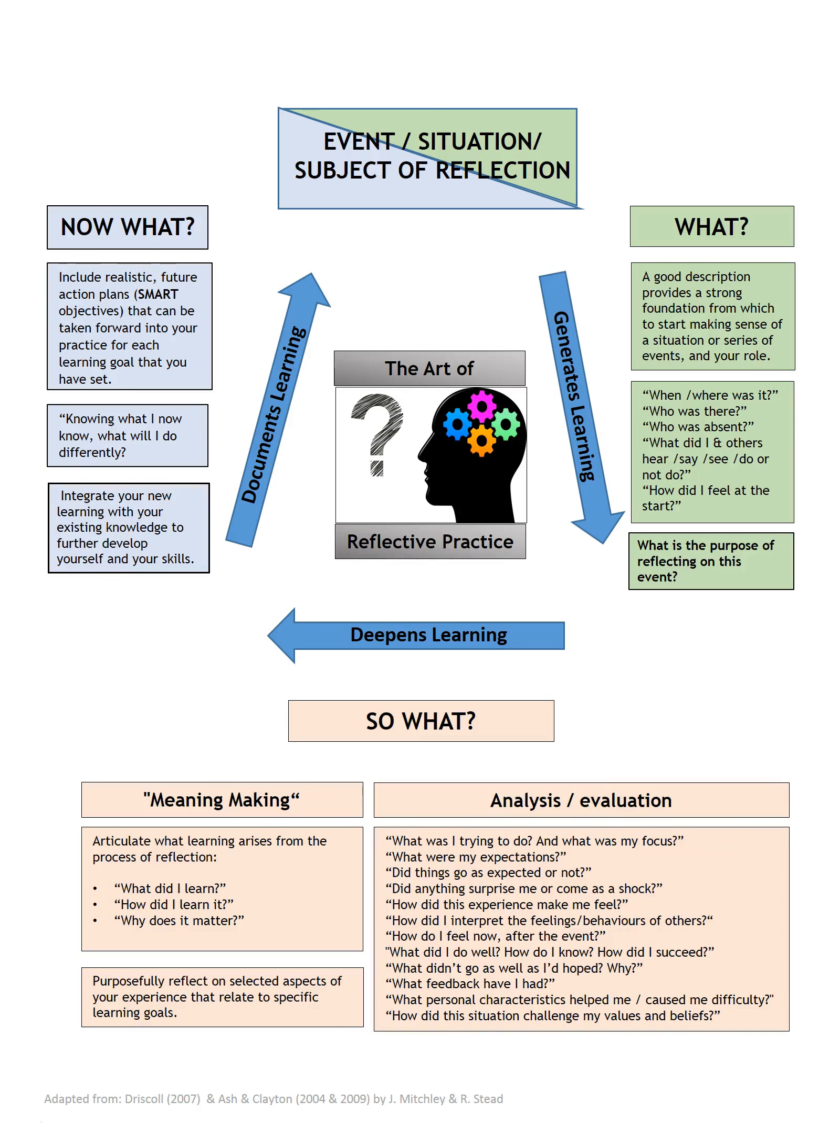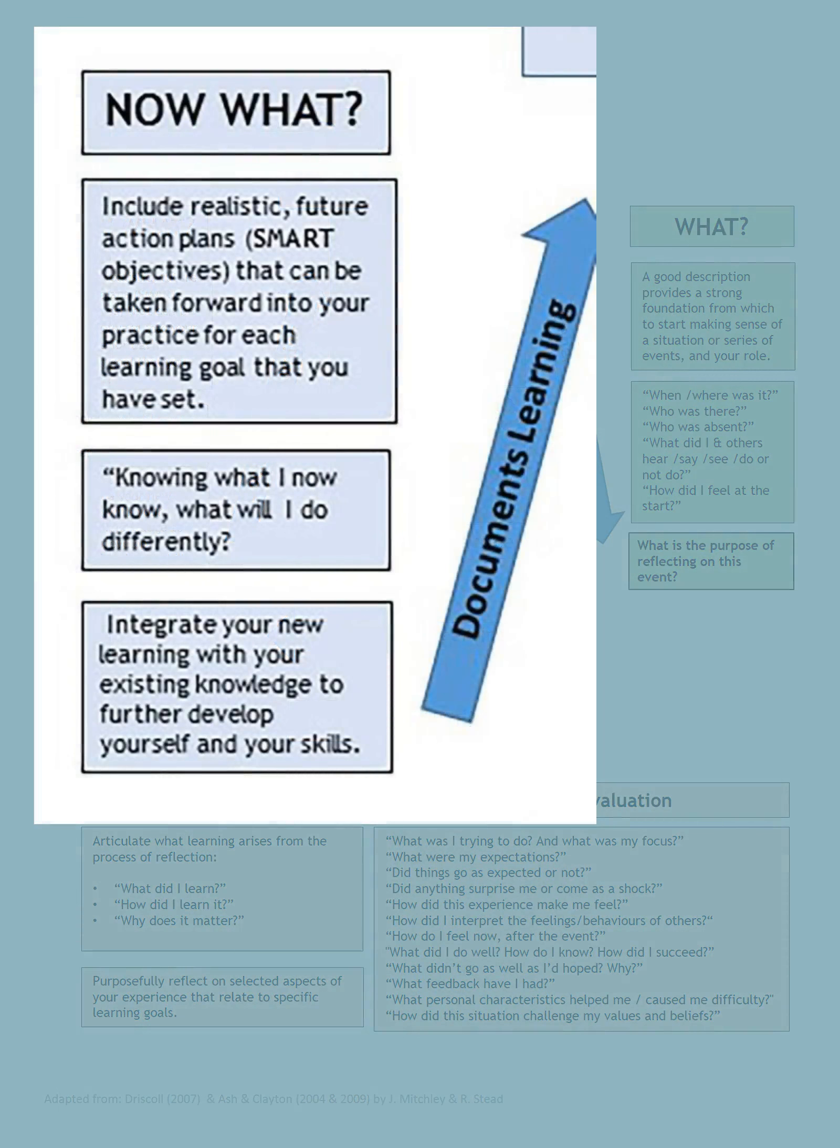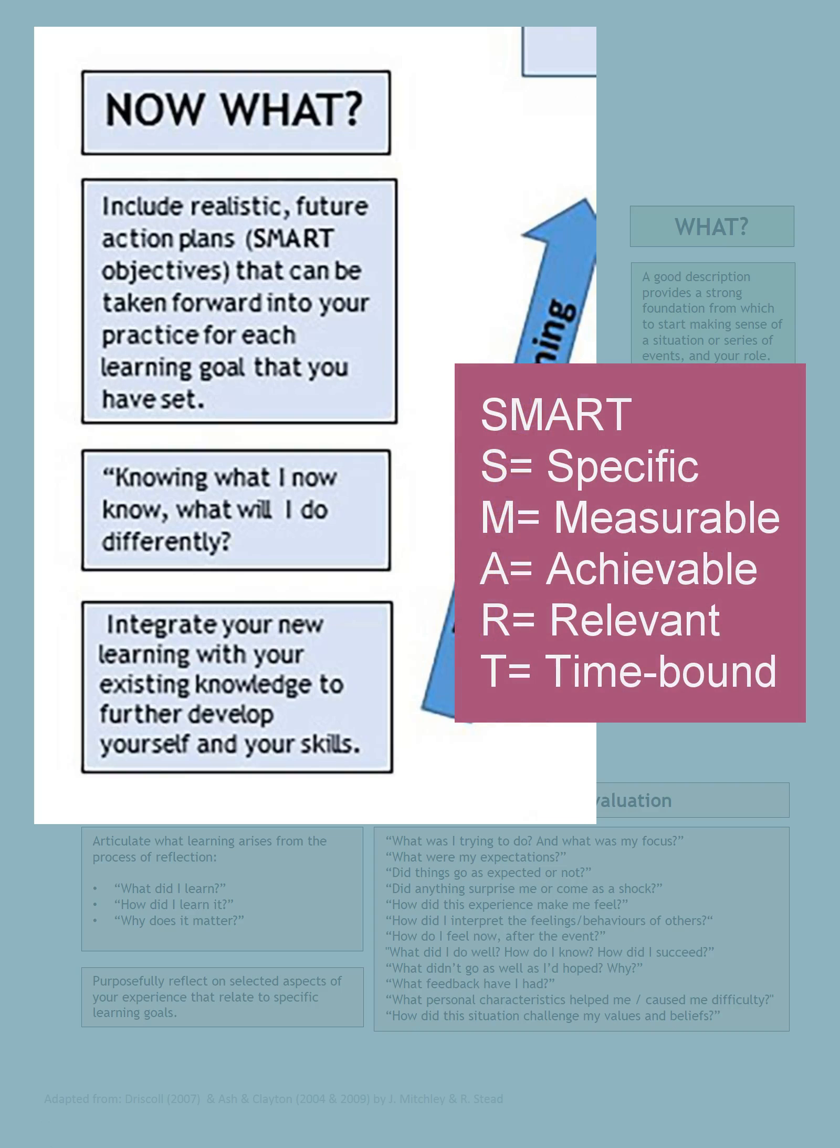So the final section of the reflective cycle is where we ask the question, now what? And this is where we need to start setting down some goals, some action plans based on what we've learnt about ourselves and what we've learnt about the situation we were involved in. It's very important here to set yourself some SMART objectives.